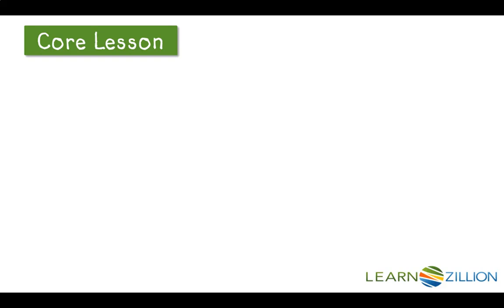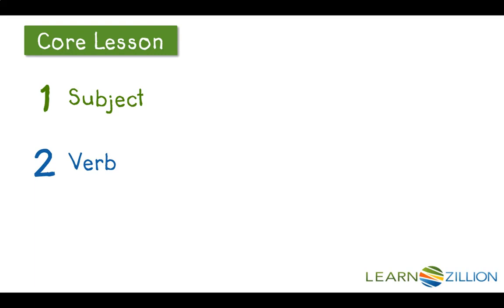There are three steps when you're writing a sentence. First, your sentence has to have a subject. Second, your sentence has to have a verb, either an action word or a state of being. Third, your sentence needs to share a complete thought.